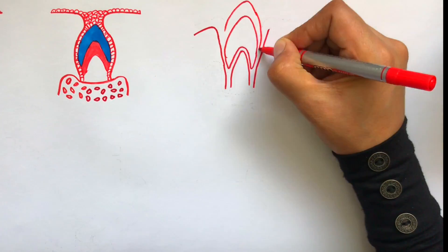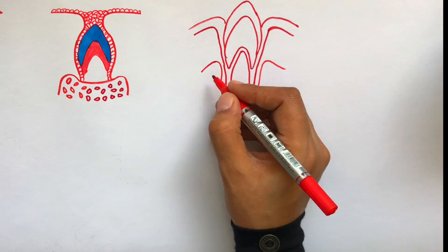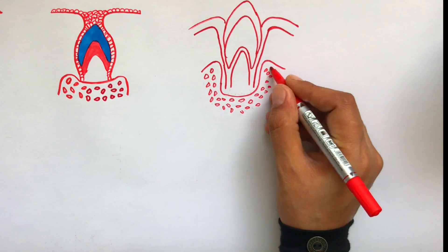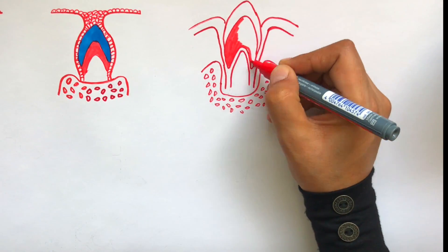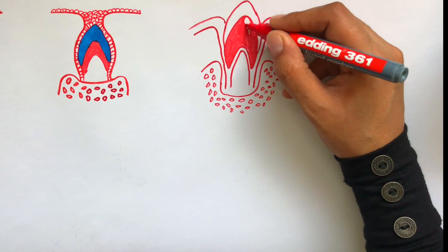The reduced enamel epithelium later on engages with the oral epithelium and finally the tooth erupts into the oral cavity, resulting in a loss of the reduced enamel epithelium with the ameloblast being a part of it.